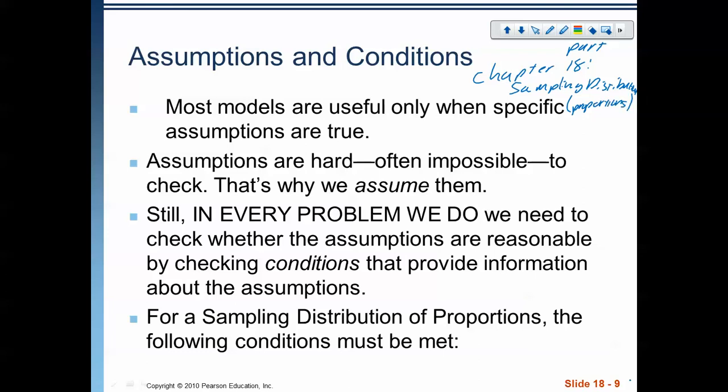So we're going to start here talking about the assumptions and conditions necessary in order to use this particular model. Because as it says here, most models are only useful when specific assumptions are true. So there's a couple of conditions that need to be true in order for us to use a particular model. In this case, in order to use a sampling distribution, which represents a normal model, we have to have a couple things be true.